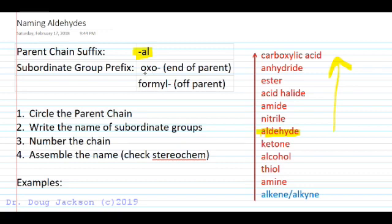If it's included in the parent chain, it will be an oxo group, and if it's off of the parent chain, that aldehyde will be a formyl group.